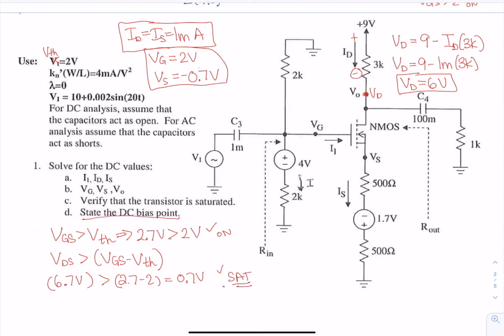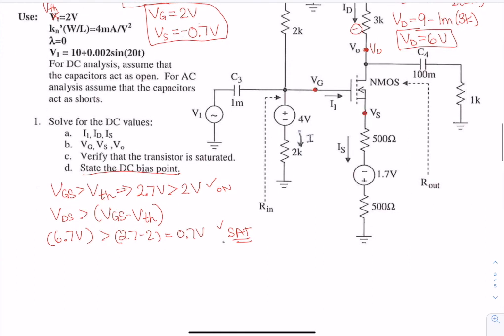So we have proven that it is saturated, and the last part of this is to state the DC bias point. The DC bias point is either VGS or the current. You can state that it's VGS or ID. Both of those are considered a bias point.